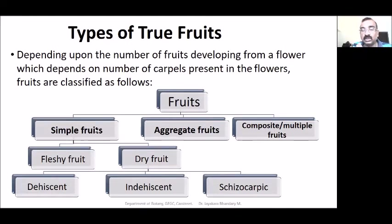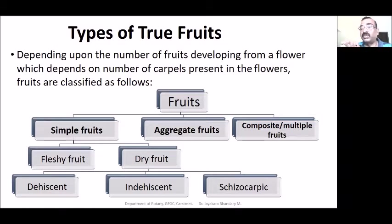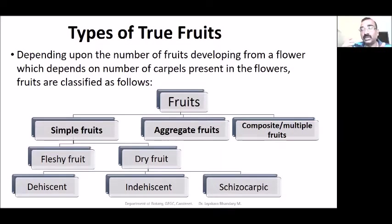Simple fruit: one flower gives rise to one fruit — a single flower produces a single fruit. That is called a simple fruit. Aggregate: from one flower, a bunch of fruits are formed — many fruits are formed. That is called aggregate. Composite: one entire inflorescence produces one fruit. That is the basic difference.